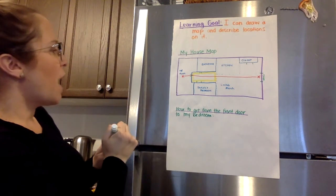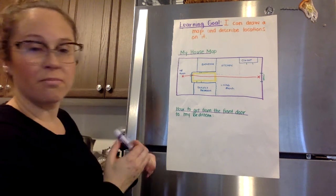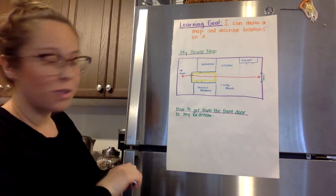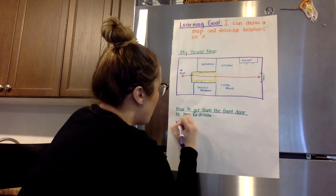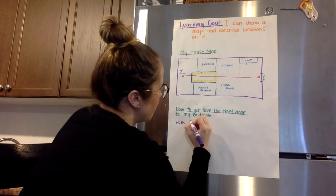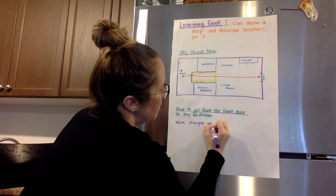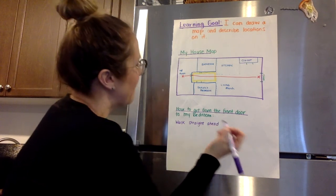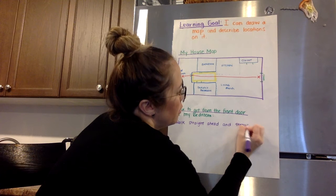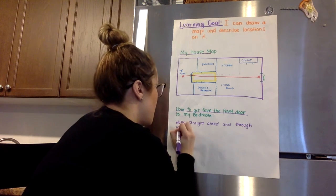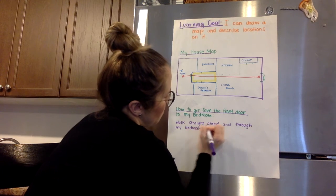So how do I get from my front door to my bedroom? So my instructions would be walk straight ahead and through my bedroom door.